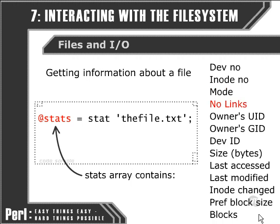There's also the number of hard links to the file within the file system, and the owner's user ID and the owner's group ID. These two are probably more relevant to Unix-based file systems than they are to, for instance, a Windows file system.